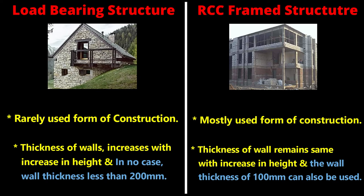Regarding wall thickness: the thickness of load bearing walls increases with increase in height, and in no case should the wall thickness be less than 200 mm for load bearing walls. In a frame structure, wall thickness remains the same with increase in height, and a wall thickness of 100 mm can also be used.